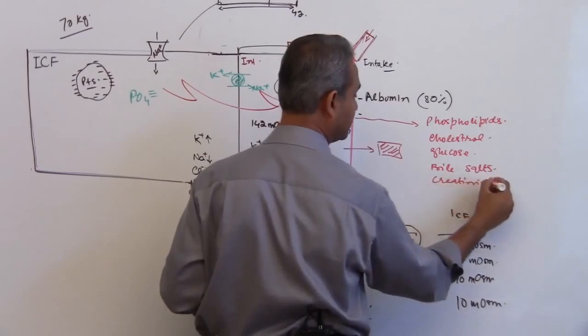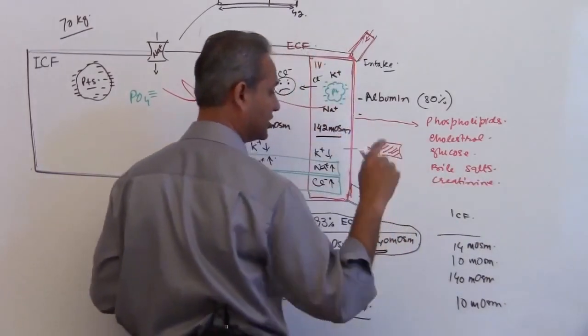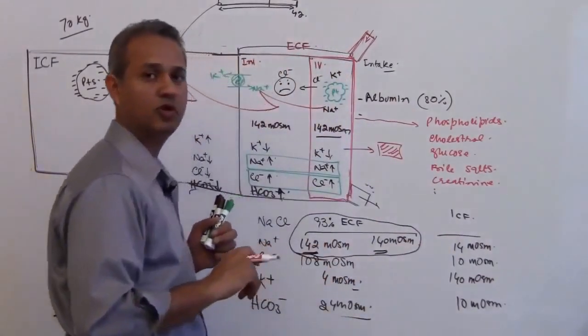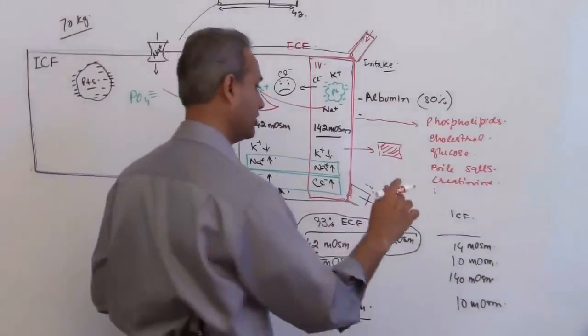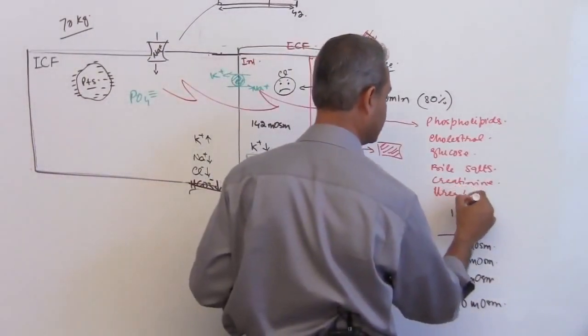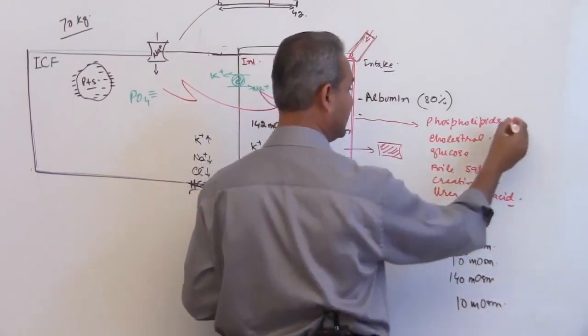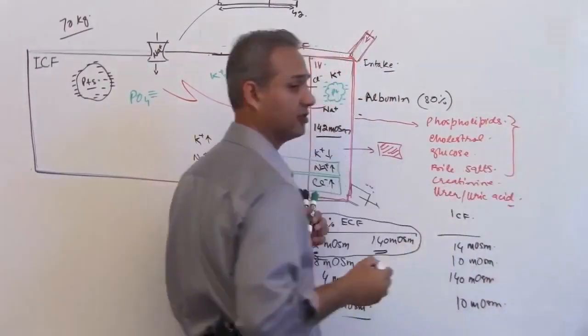Remember creatinine, urea, blood urea nitrogen, and creatinine. Other smaller molecules include uric acid and urea. These things, but by far these are the majority.